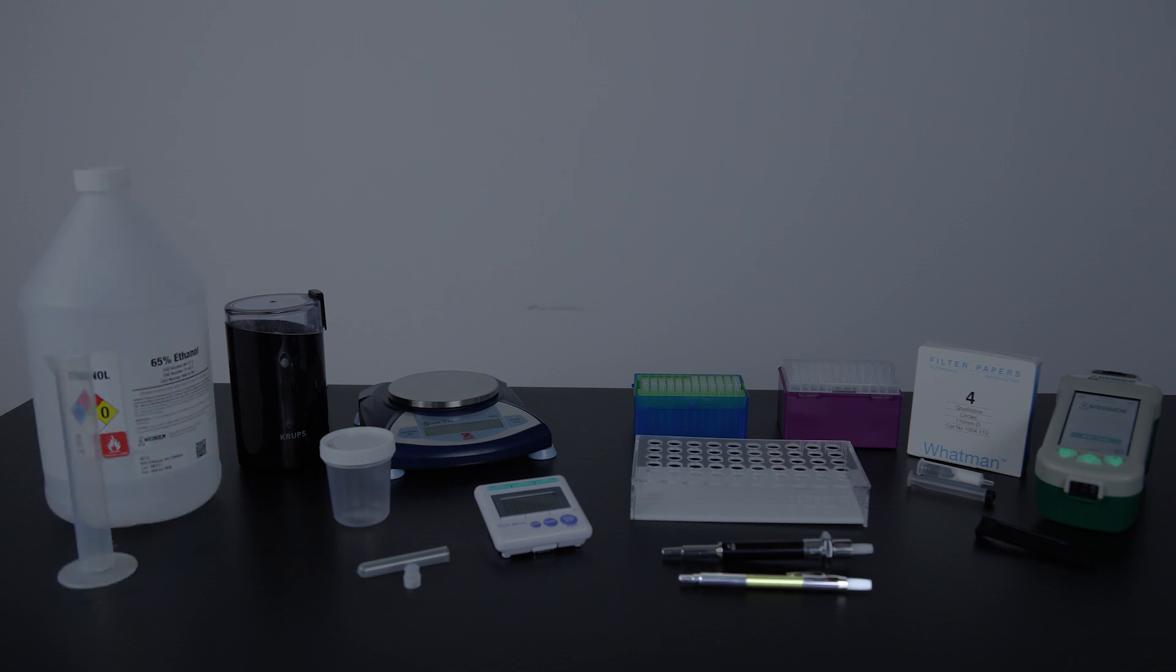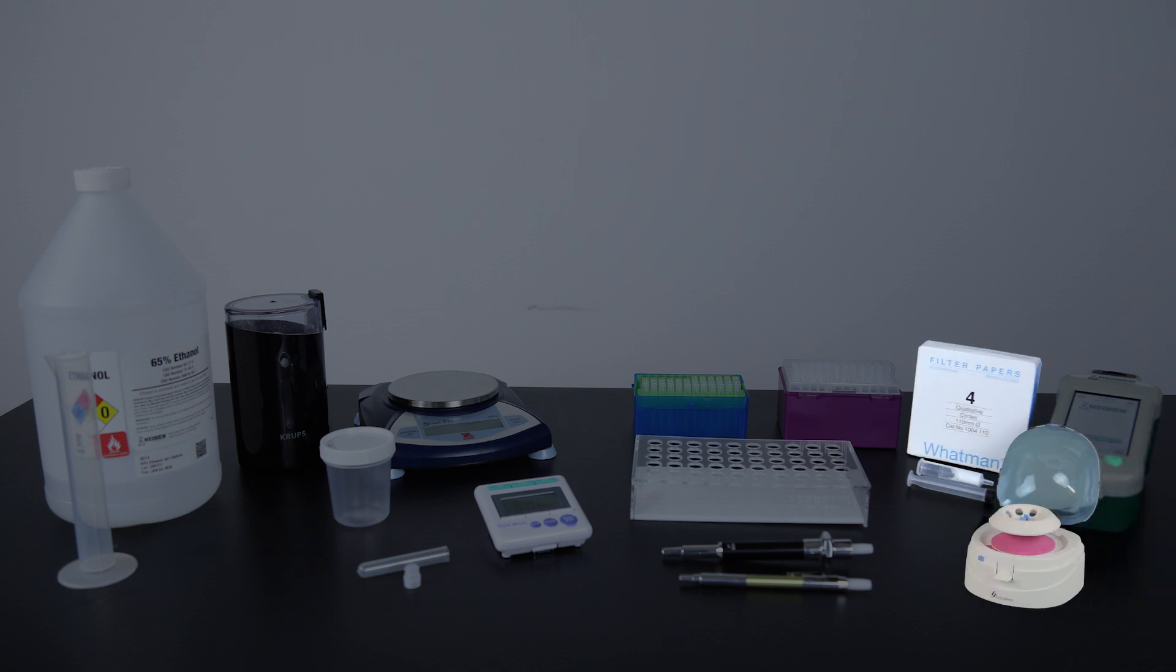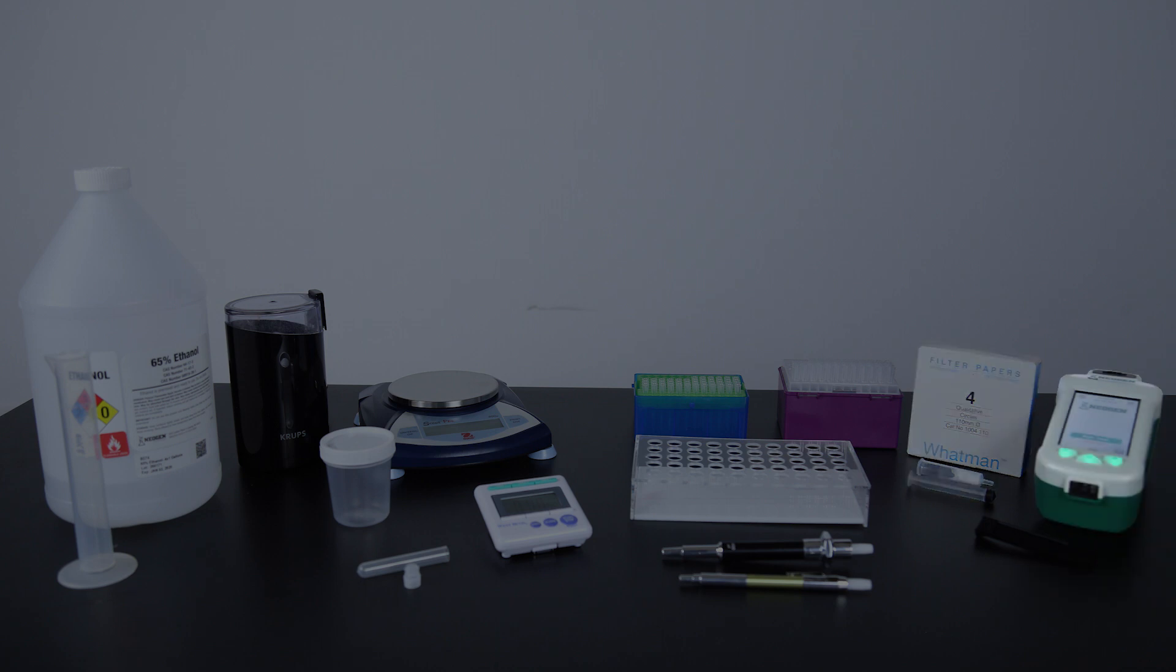You'll also need 65 percent ethanol solution, a 200 microliter and 400 microliter pipetter and tips, sample collection cups and lids, sample collection tubes and caps, filter syringes, Whatman number 4 filter paper or mini centrifuge and tubes, a Raptor Solo integrated analysis system, and Raptor cartridges.